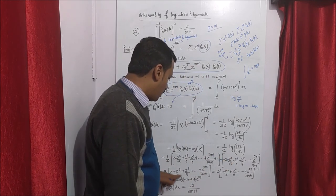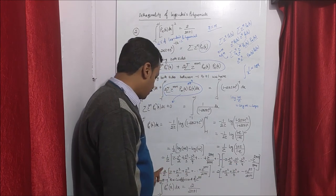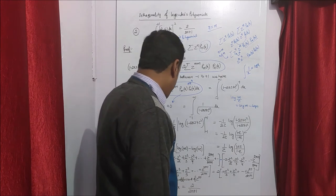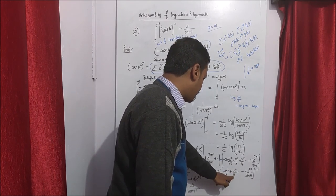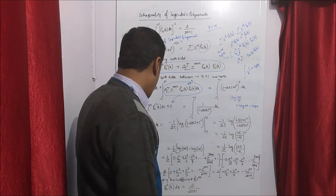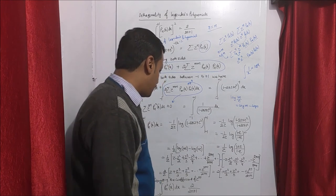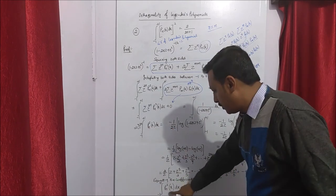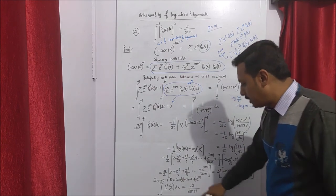Using log properties, minus half reverses to give log(1 plus z) minus log(1 minus z) terms. Using log(m/n) equals log m minus log n, and expanding log(1 plus z) and log(1 minus z), we get all odd terms surviving — 2 times (z plus z cubed over 3 plus z to the power 5 over 5 plus ...). After cancellation, we get 1 plus z squared over 3 plus z to the power 4 over 5 plus z to the power 2n over (2n plus 1).